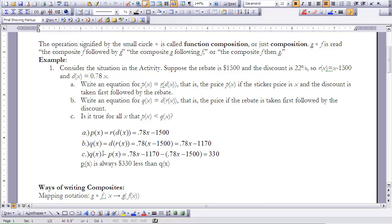If we find the difference between those two, if I take Q of x subtract P of x, we notice that 0.78x minus 1170 minus 0.78x minus 1500 gives me a difference of $330. So P of x is always $330 less than Q of x. What that means is if I take the discount first, the percentage off the sticker price, and then apply the rebate, my price will always be $330 less than if I take the rebate first and then the discount.